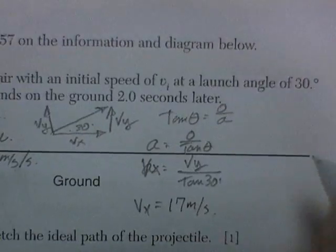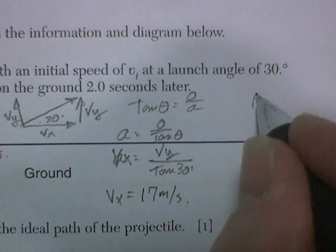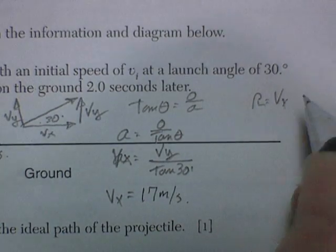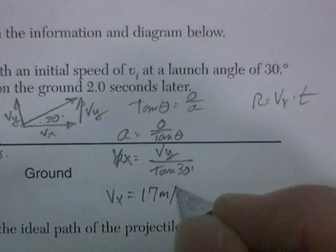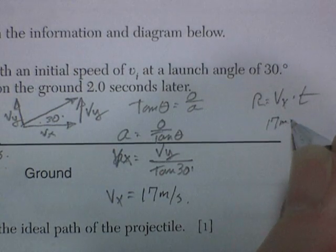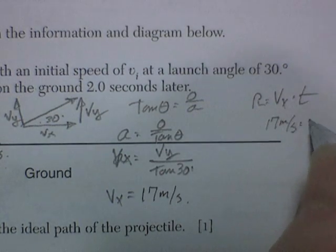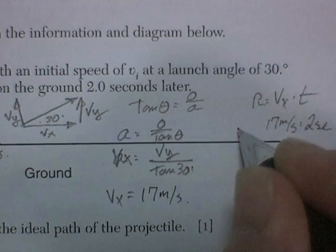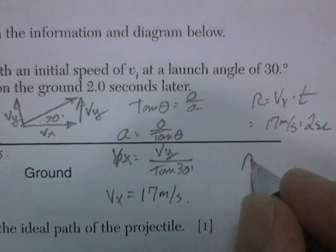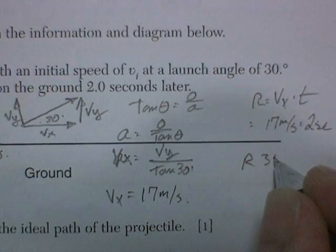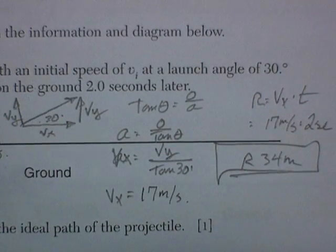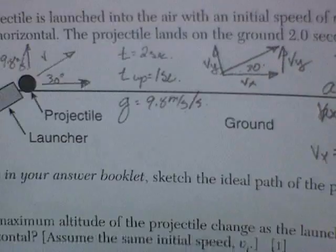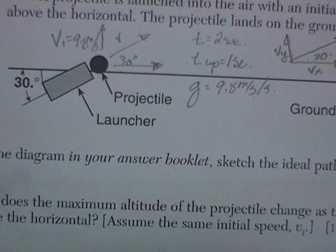I could tell you how far the thing travels. The range will be equal to the velocity in the x-axis times the time in the air. So 17 meters per second times 2 seconds gives you about 34 meters. We go 34 meters — all sorts of things we know about this. So we feel pretty comfortable about things launched at an angle.